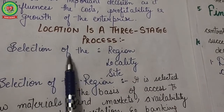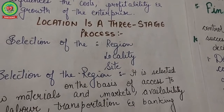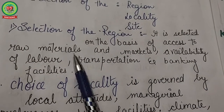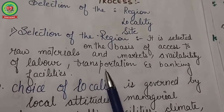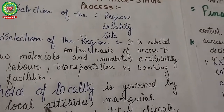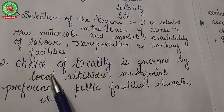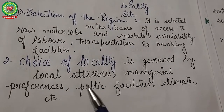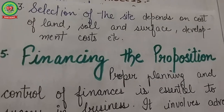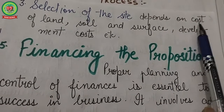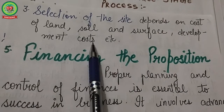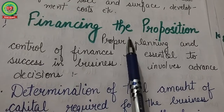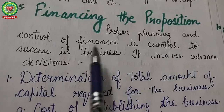Location is a three-stage process involving selection of region, locality, and site. The region is selected based on access to raw material and markets, availability of labor, transportation, and banking facilities. The choice of locality is determined by local attitudes, managerial preferences, public facilities, and climatic conditions. The selection of the specific site depends on the cost of land, soil and surface conditions, and related costs.